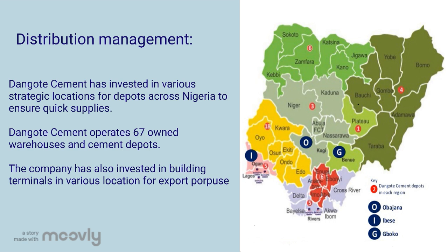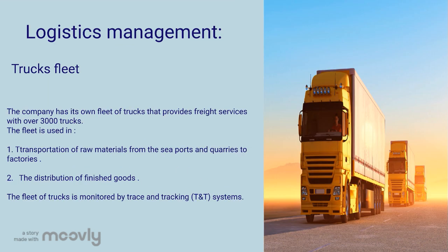Dangote Cement operates with 67 owned warehouses and cement depots. The company has also invested in building terminals in various locations for export purposes. For logistics management, the company has its own fleet of over 3,000 trucks, used for transporting raw materials from seaports and ferries to factories, as well as for distributing finished goods. The fleet of trucks is monitored by track and tracking systems.